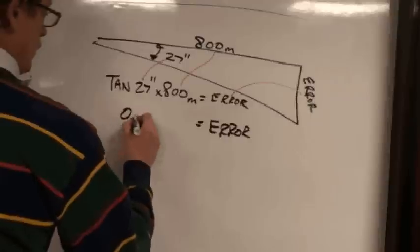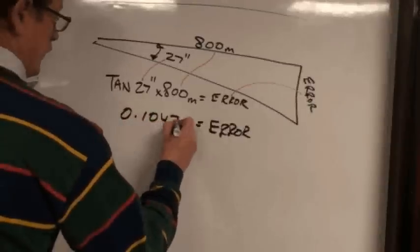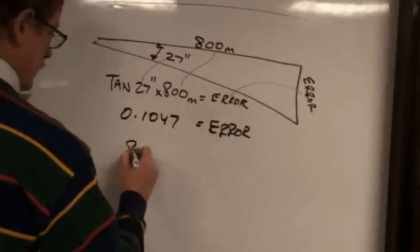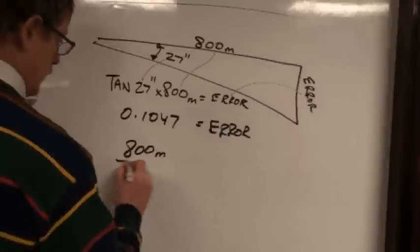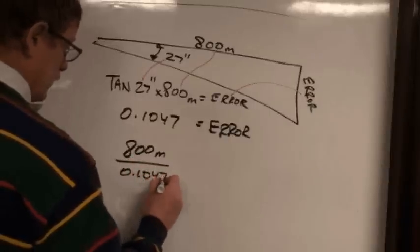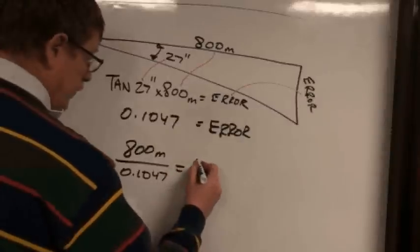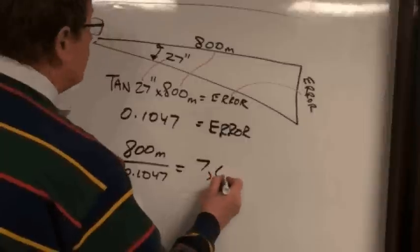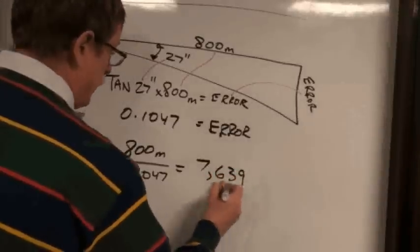To calculate the error, you take the tangent of 27 seconds, multiply it by 800 meters, and in this case it works out to 0.1047. 800 meters divided by 0.1047 gives us our ratio of 1 to 7,639.